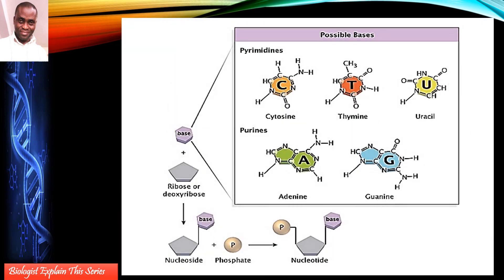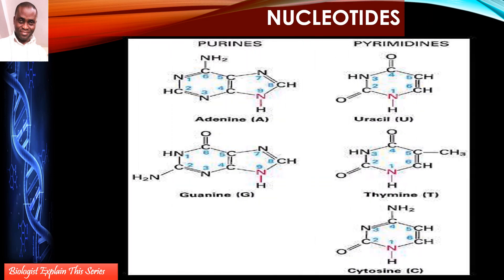This slide shows other nucleotide structures. Study them and compare, so you can understand why the number of hydrogen bonds between base pairs can be two or three depending on which bases are pairing. This also shows the numbering of carbon atoms on the sugars of the nucleotides.